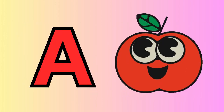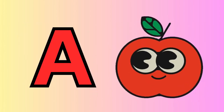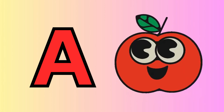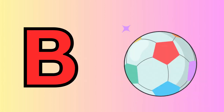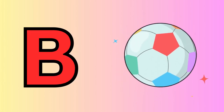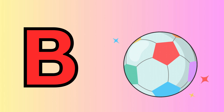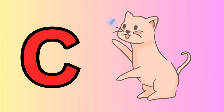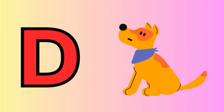A is for apple, a-a-apple. B is for ball, b-b-ball. C is for cat, c-c-cat. D is for doll, d-d-doll.